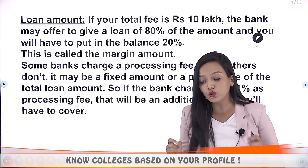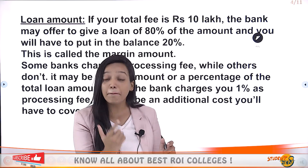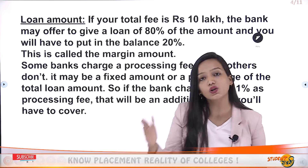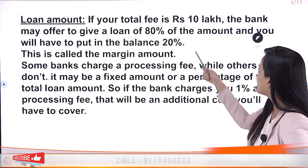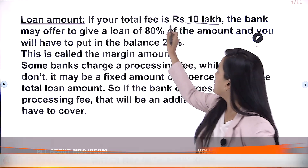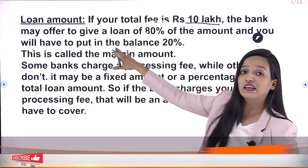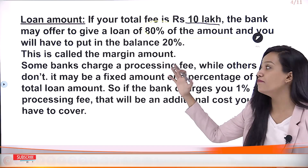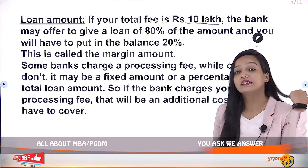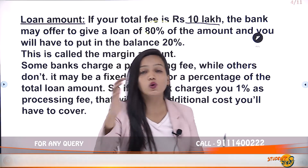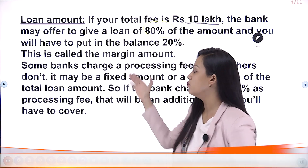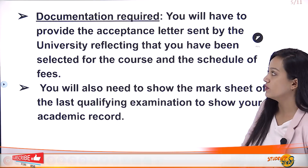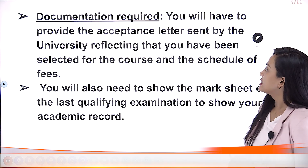Coming to the loan amount: government banks typically offer 80% of the loan amount. You have to arrange 20% yourself — this is called the margin amount. So if your total requirement is 10 lakh, the bank gives 80% and you need to show 20% balance in your account. Some banks also charge a processing fee of around 1% of the loan amount, which is an additional cost you need to cover.